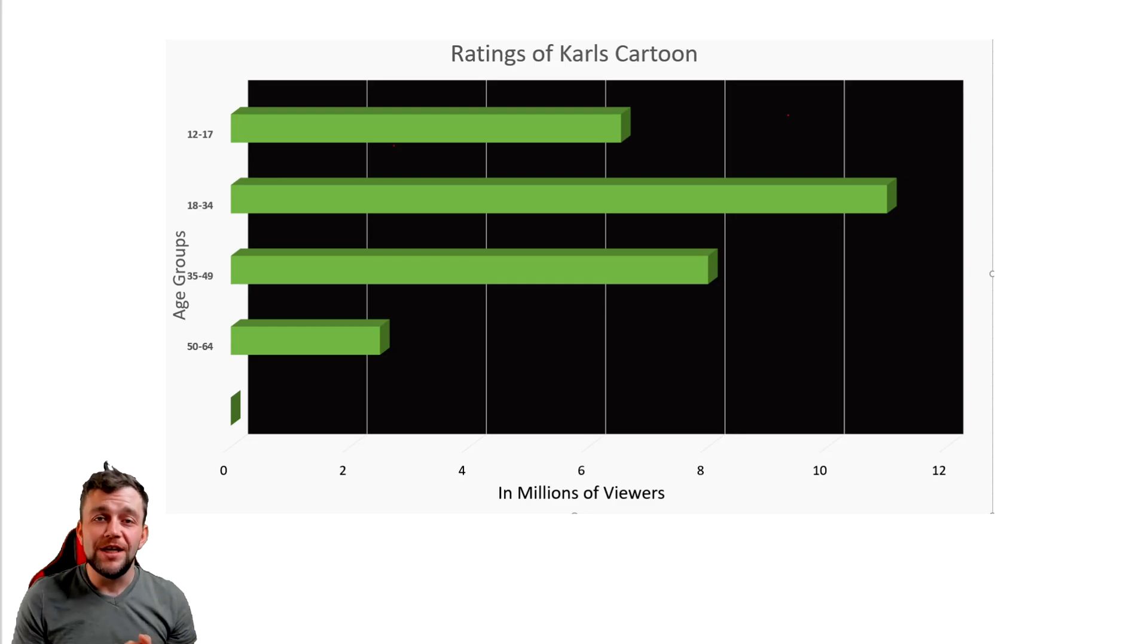an age range for the next bar, 18 to 34, the next bar, 35 to 49, and the last bar, 50 to 64. And apparently, in my diagram that I made up, nobody exists over the age of 64. So, whoops, I messed up. However, we can still use this. It's totally fine. This histogram is comparing age groups with the millions of viewers of the ratings of Carl's cartoon.